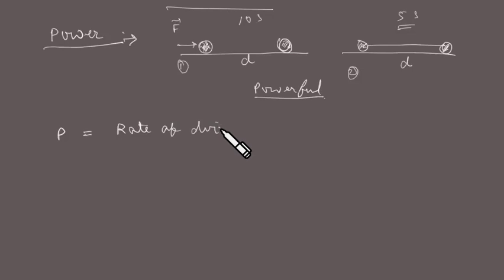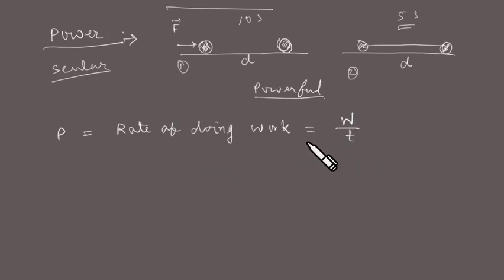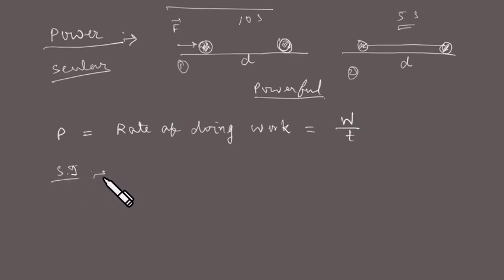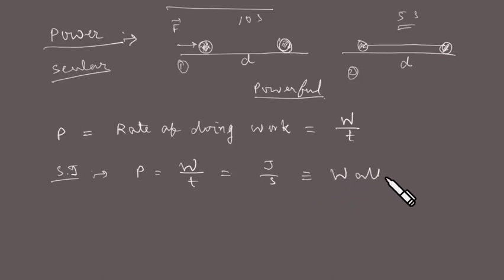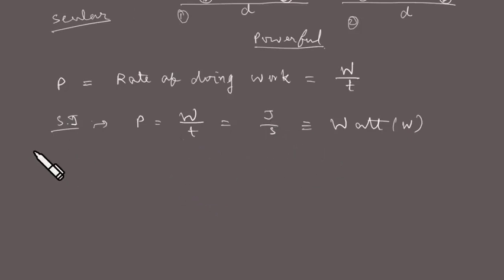Power, represented as P, is the rate of doing work — work divided by time. Power is also a scalar quantity because work is scalar and time is scalar. The SI unit of power is Joule per second, which is also called Watt, written as W.